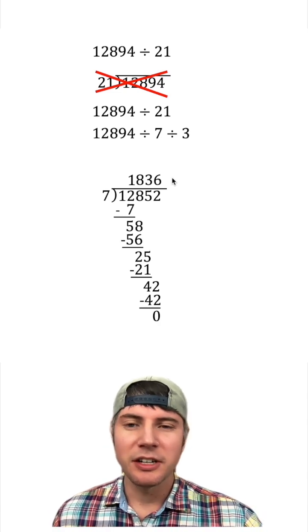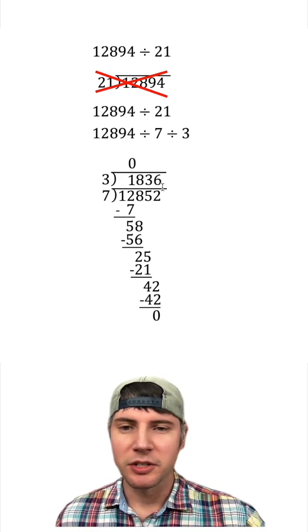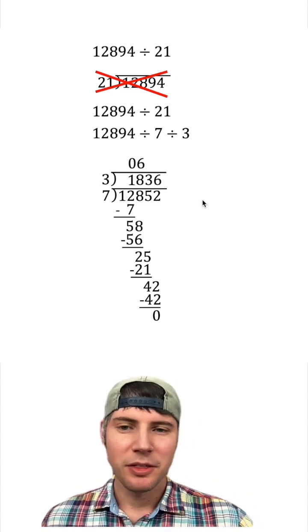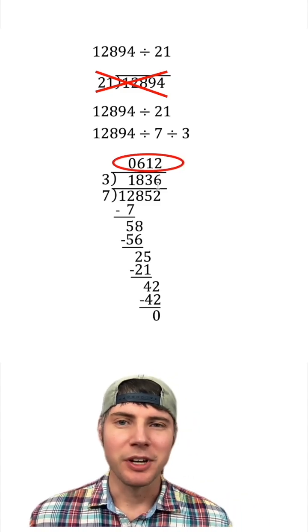Now we can take this answer and divide that by 3. 3 goes into 1 zero times. 3 goes into 18 six times. 3 goes into 3 once, and 3 goes into 6 twice. And now we're done.